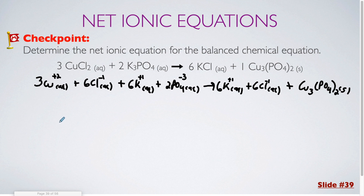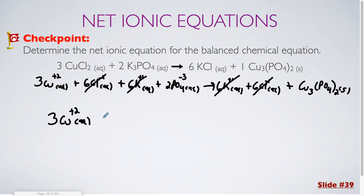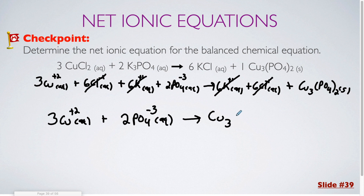What I've written here is the complete ionic equation. Next, I need to get rid of all those spectator ions. I see that there are six K⁺ on this side and six K⁺ on that side, so I cancel those out. There are six Cl⁻ and six Cl⁻ — those also cancel. Everything that's left is going to be part of the net ionic equation: 3 Cu²⁺ (aq) + 2 PO4³⁻ (aq) → Cu3(PO4)2 (s).